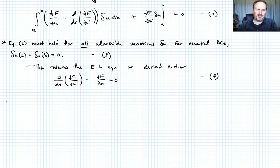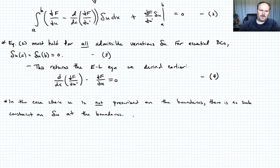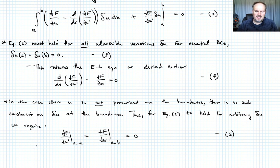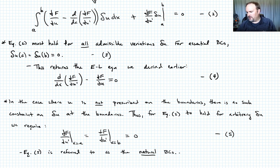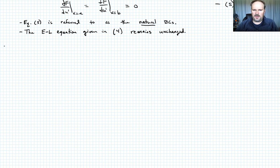What about the case where u is not prescribed at the boundaries? In that case, there is no such constraint on delta u at the boundaries. The only way equation two can hold for an arbitrary delta u — if delta u isn't zero on the boundaries — is if del f del u prime is zero on the boundaries. So we write that del f del u prime evaluated at x equals a is equal to zero, and del f del u prime evaluated at x equals b is equal to zero. Call that equation five. These conditions are referred to as natural boundary conditions. Once those are satisfied, the boundary term goes to zero, and we're still left with the same Euler-Lagrange equation.